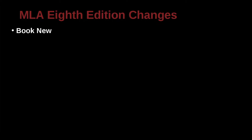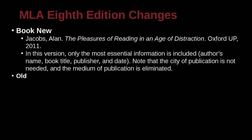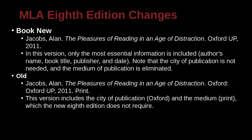Let's take a look at the changes for referencing books. In the reference list, some things are similar and some things are different. For the book reference, Jacob Allen is the author, and then the title is 'The Pleasures of Reading in an Age of Distraction,' Oxford UP. In the new version, only the most essential information is included: the author's name, the book title, the publisher, and the date.